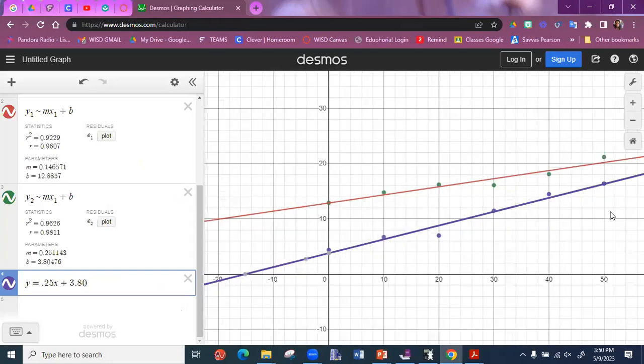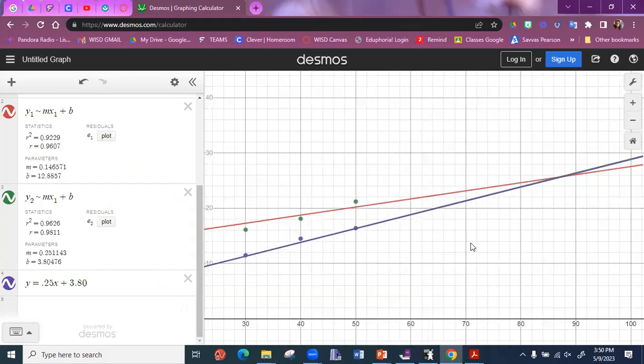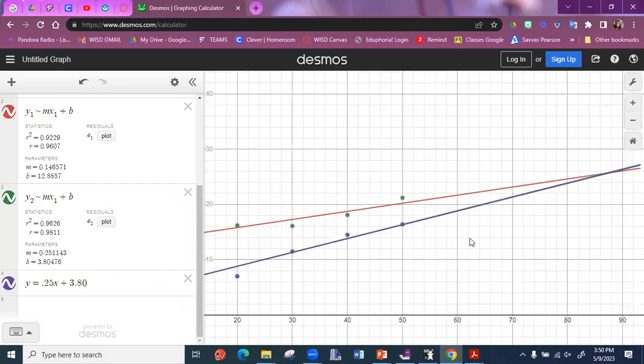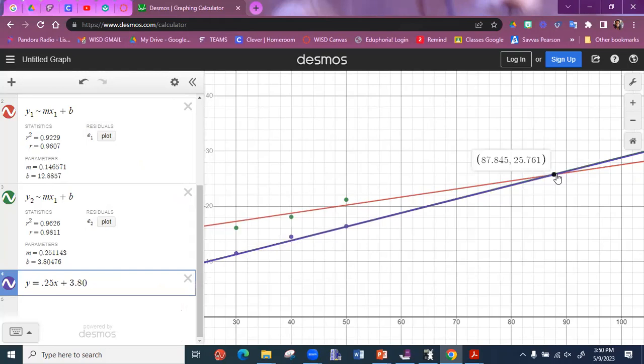So we're going to go back here. I'm going to zoom out a little bit. But after I zoom out, I'm just going to scroll until I see where they intersect. So notice how I just scrolled until I found their intersection. I'm going to click and ta-da. It tells me their intersection. So I found the intersection. So here's my X. My X is 87 and 845 thousandths. And my Y is 25 and 761 thousandths. What does X and Y represent?